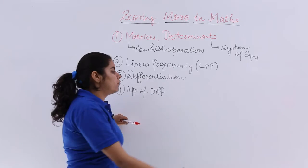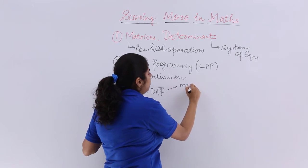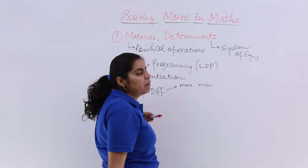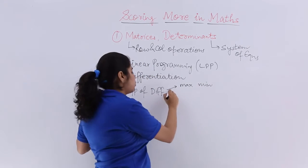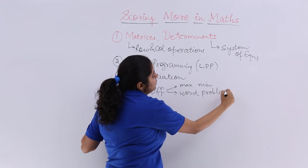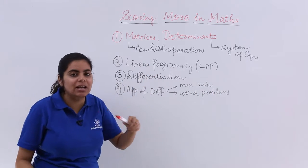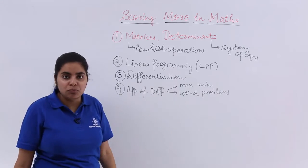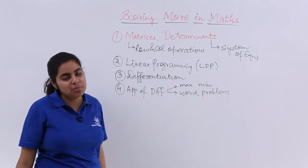In this, go for maxima minima problems, local maxima, local minima and in this, even go for your word problems for 4 markers and 6 markers. Word problems, right? Remember in application of derivatives, the last last exercises were based on the word problems. So that is for your 6 marks and all.